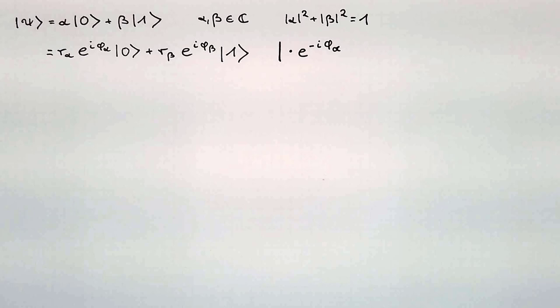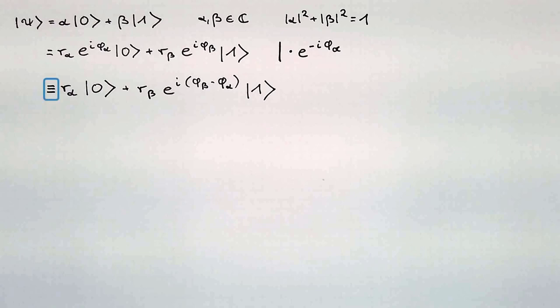Also, the difference between the phases of alpha and beta remains the same. From the view of a physicist, the new term still represents exactly the same qubit. Mathematically, the new term r_alpha times state 0 plus r_beta e to the i in brackets phi_beta minus phi_alpha times state 1 is equivalent to the original term of psi. That's the reason I used the symbol for equivalence here, instead of an equal sign.